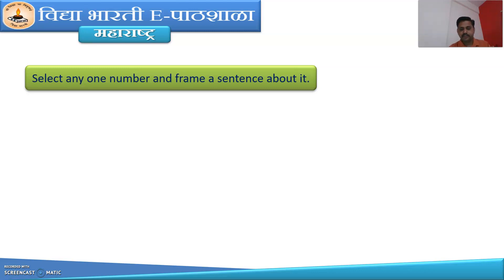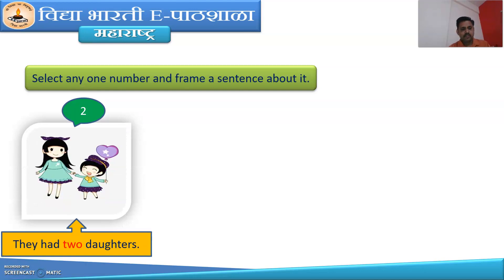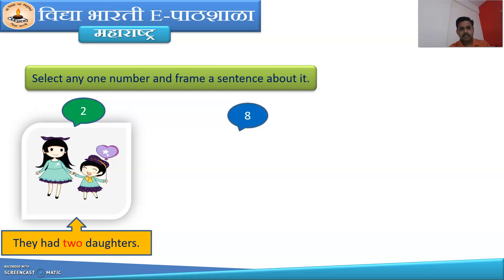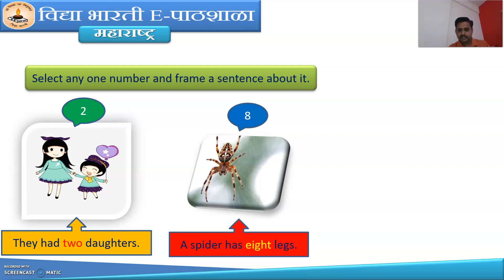So are you ready students? Good. So here is the number — number is 2. There is a picture. There are two girls in the picture. So the sentence will be like this: They had two daughters. Next number is 8. There is a picture of a spider, and a spider has how many legs? A spider has 8 legs. You have to frame a sentence like this using the number.